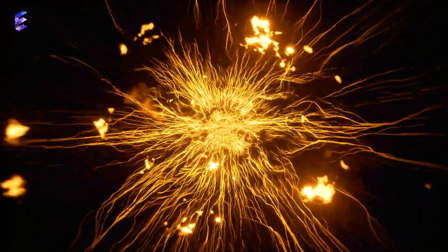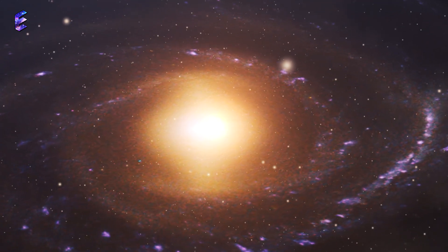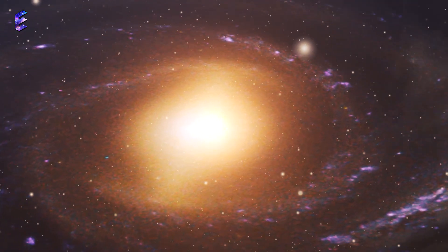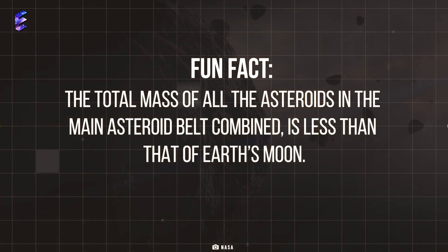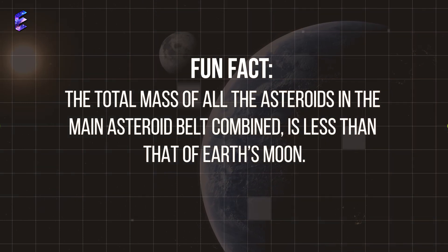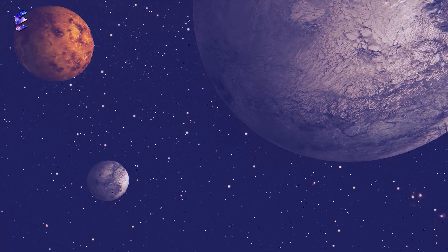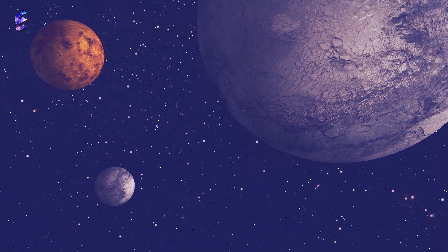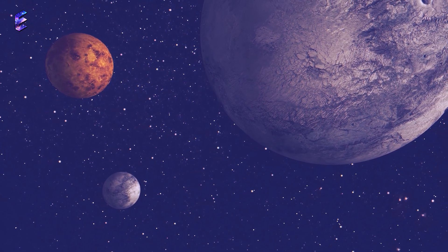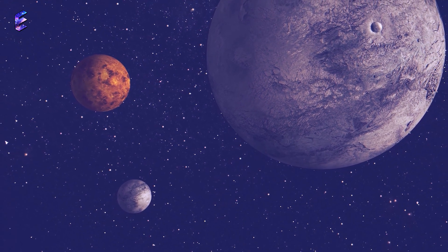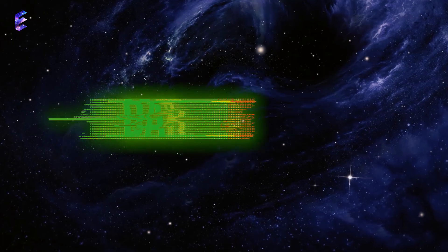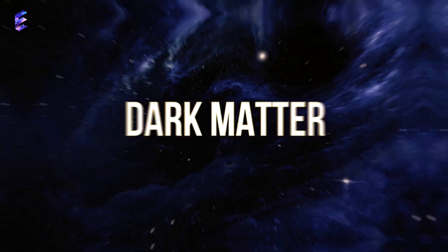Fun fact: the total mass of all the asteroids in the main asteroid belt combined is less than that of Earth's moon. And after all, with these known celestial objects, we have something that scientists and astronomers are still trying to learn about: dark matter.